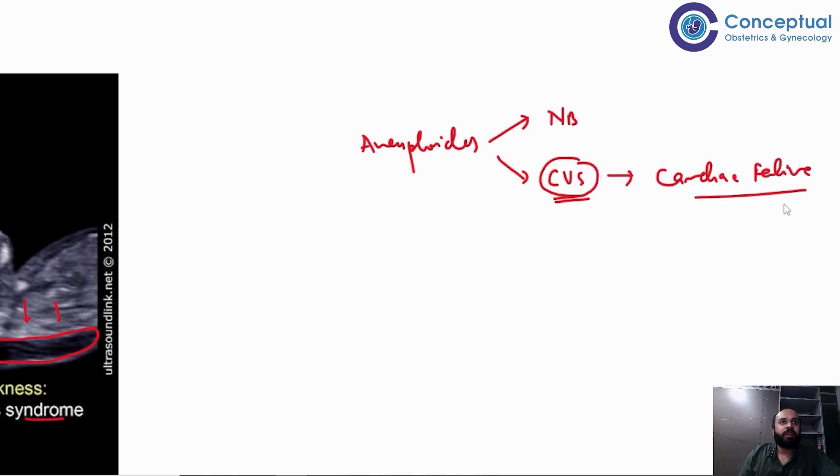Whenever there is any genetic defect or infection, torch infection, or chromosomal abnormality, the cardiovascular system is going to be one of the first things affected. Whenever the cardiovascular system is affected it leads to cardiac failure. Cardiac failure causes back pressure changes and increased hydrostatic pressure. Similarly, because of any aneuploidy, if there are renal system or hepatobiliary system problems, there is reduced production of proteins, which is the protein the fetus makes.